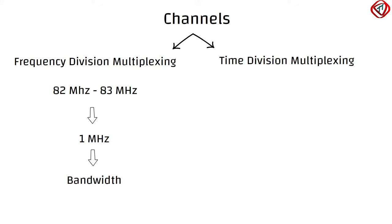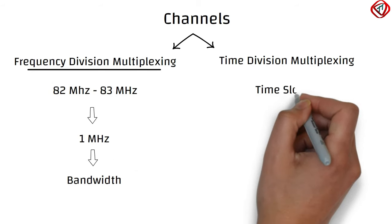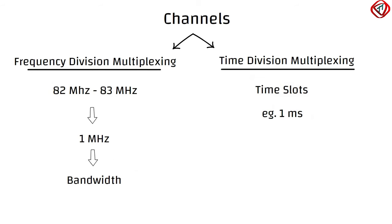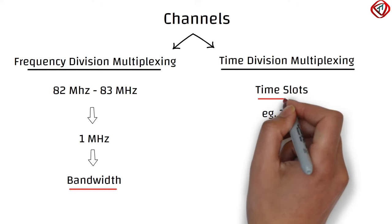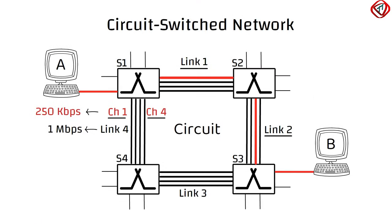The channels are bandwidth in frequency division multiplexing, and time slots in time division multiplexing. So, bandwidth or time slots are reserved for sender-receiver pairs in a circuit switched network.